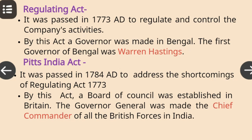Regulating Act: It was passed in 1773 AD to regulate and control the company's activities. By this act, a governor general was made for Bengal, and the first governor general of Bengal was Warren Hastings.